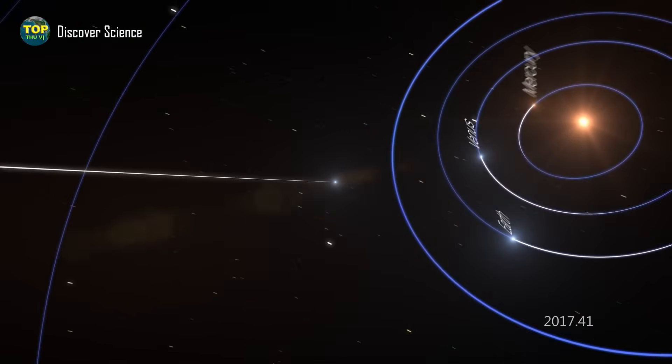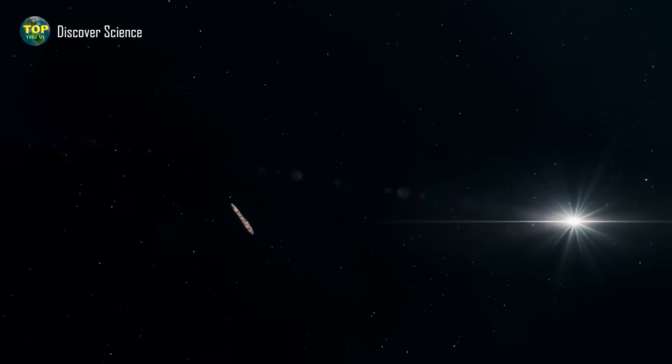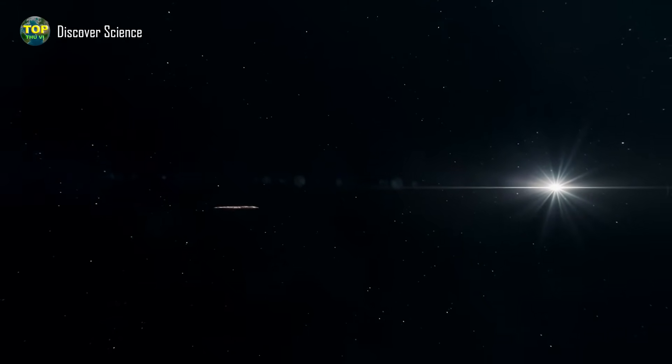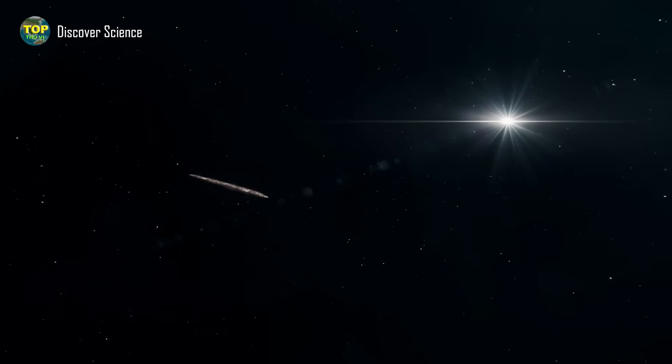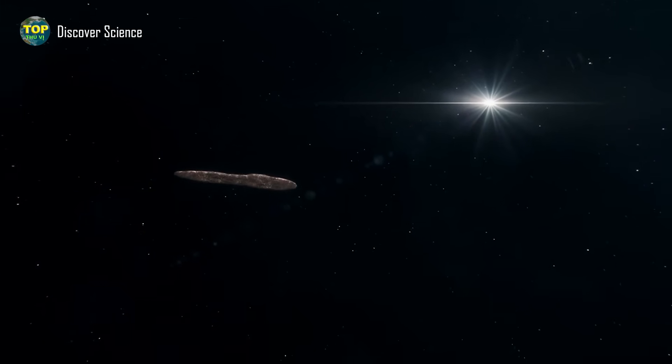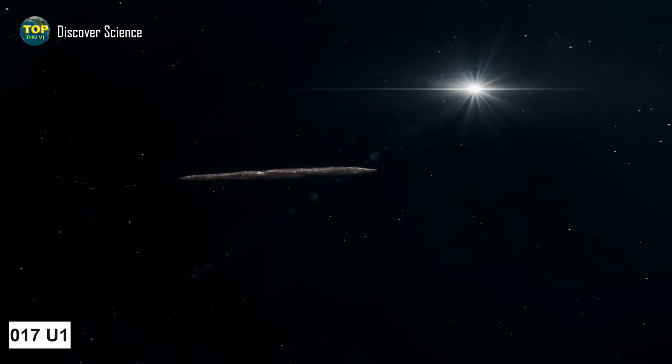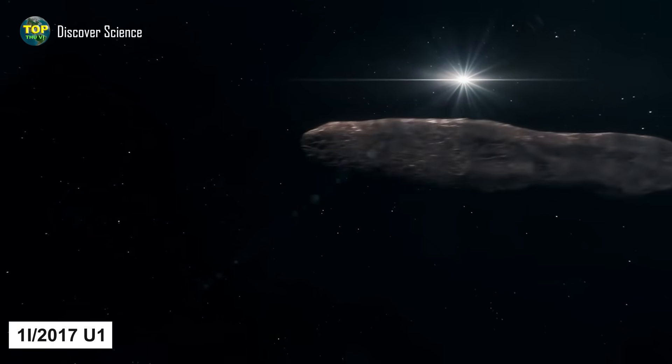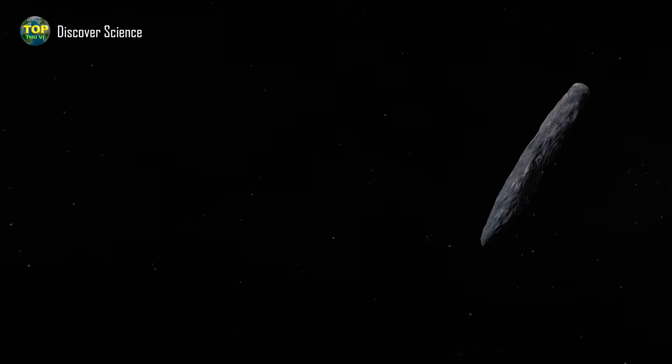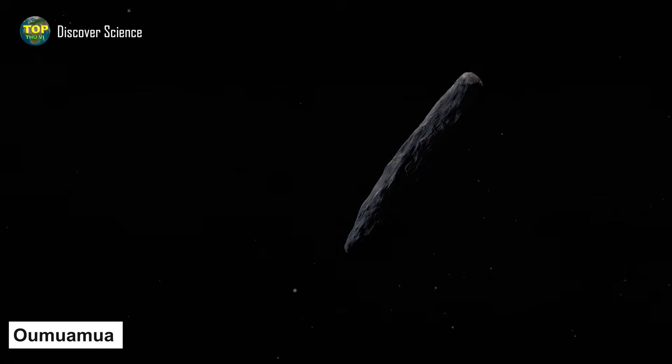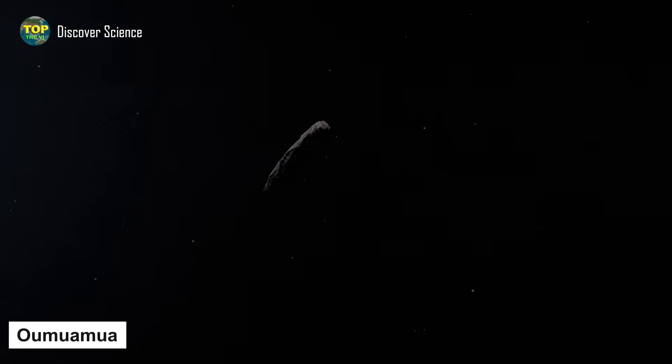At that point, the International Astronomical Union (IAU) had to choose a new name for this strange object. Eventually, they decided to use the letter 'I' to represent an interstellar object. Its official name became 1I/2017 U1, and people began calling it by a more familiar name: 'Oumuamua, which in Hawaiian means 'the first distant messenger.'